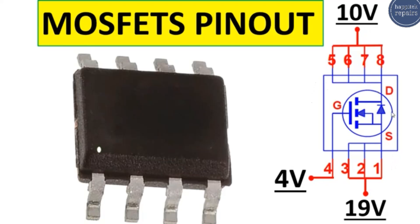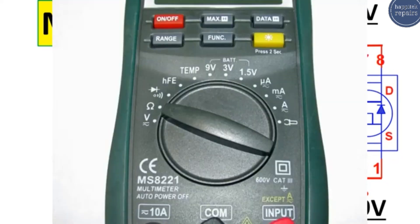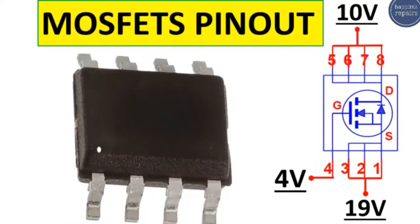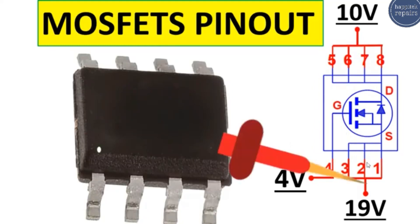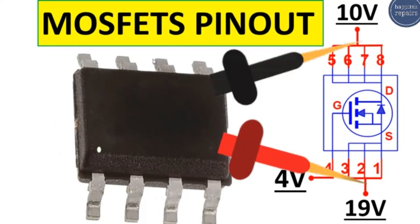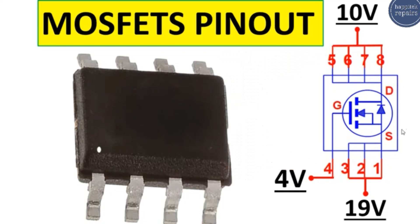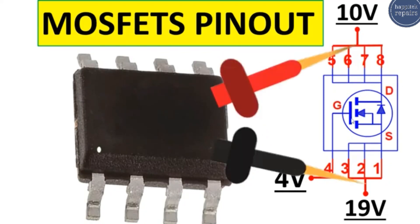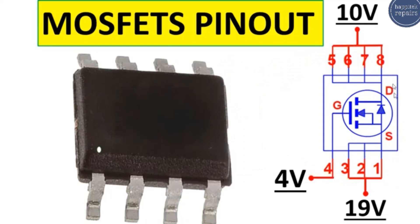To test this MOSFET, test between drain and source using the multimeter in buzzer or continuity mode. Place the red probe on the source and the black probe on the drain — you should get a reading because of the internal diode, where the anode and cathode are present. When you reverse the probes, you should get no reading, which means the MOSFET is good. If you hear a buzzer or get continuity between drain and source in both directions, the MOSFET is bad.